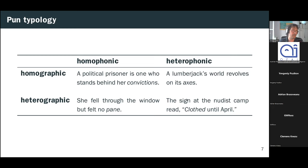And finally, we have a pun which is both heterographic and heterophonic. So the sign of the nudist camp read, clothed until April. So the pun here is clothed, meaning wearing clothes. And the target is closed, meaning shut. So again, both the pronunciation and the spelling here are different. And one more piece of terminology is when we talk about an imperfect pun. The term imperfect means one which is either heterographic or heterophonic or both.